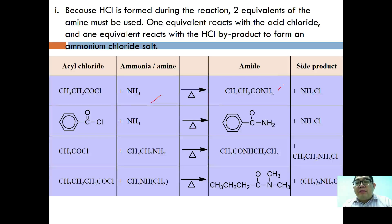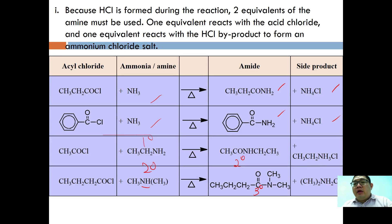Examples of amide formation: reacting acyl chloride with ammonia forms a primary amide plus NH4Cl. Reacting benzoyl chloride with ammonia forms benzamide plus NH4Cl. Reacting acyl chloride with a primary amine forms a secondary amide, and reacting with a secondary amine forms a tertiary amide.